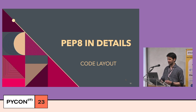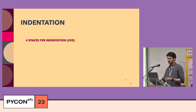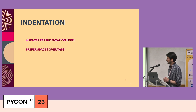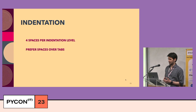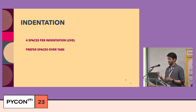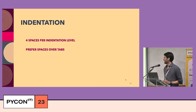Now let's move on to PEP8 in details, starting with code layout — indentation. PEP8 recommends four spaces per indentation level, preferring spaces over tabs. Tabs should be used solely to remain consistent with code that is already indented with tabs. However, for example in PyCharm, by default it uses tabs. So as you can see, PEP8 conventions are not set in stone — they are a guide worth following rather than something to blindly stick to.